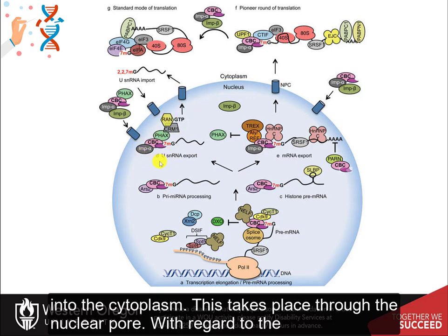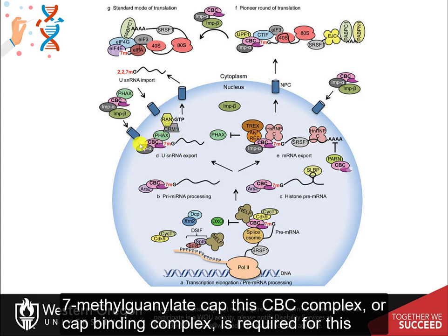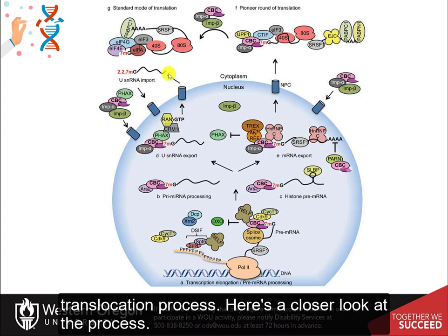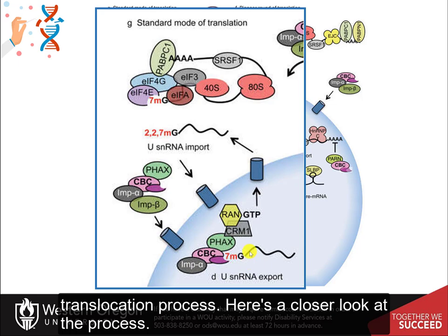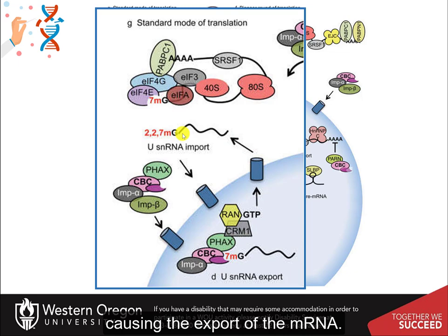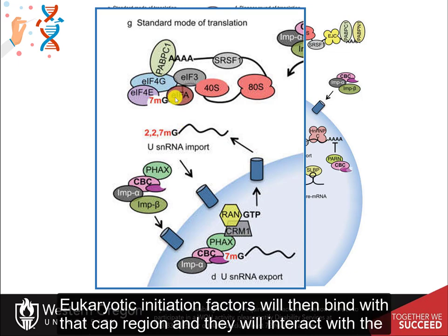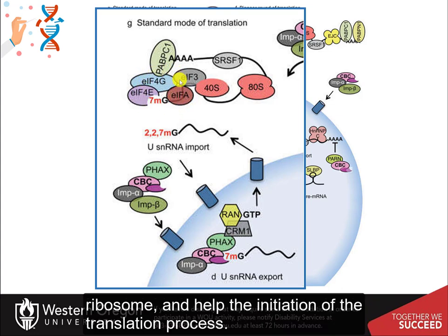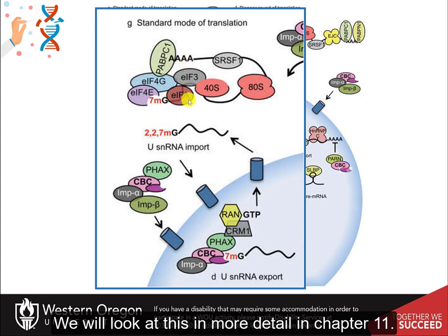With regard to the seven-methylguanosine cap, the CBC complex, or cap binding complex, is required for this translocation process. CBC will bind to the seven-methylguanosine cap, and this will be recognized by the nuclear pore, causing the export of the messenger RNA. Eukaryotic initiation factors will then bind with that cap region, interact with the ribosome, and help the initiation of the translation process. We will look at this in more detail in chapter 11.